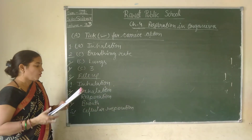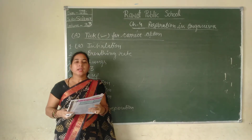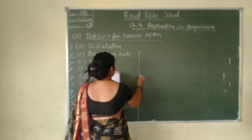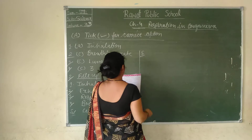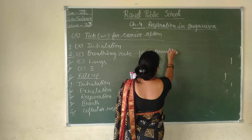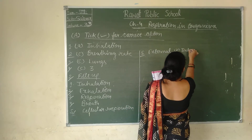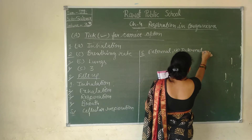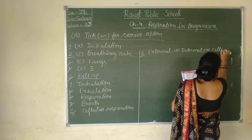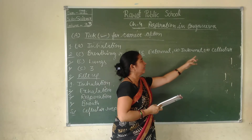Question number six: respiration takes place in how many phases? The answer is three phases. The three phases are: first, external; second, internal; and third, cellular.